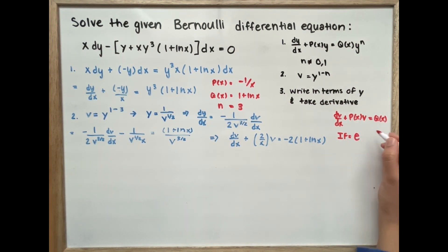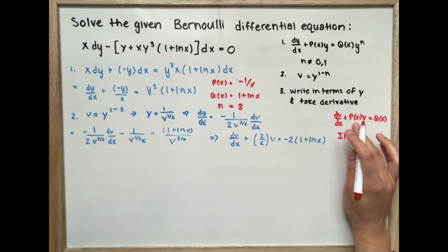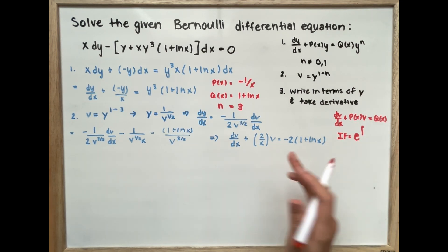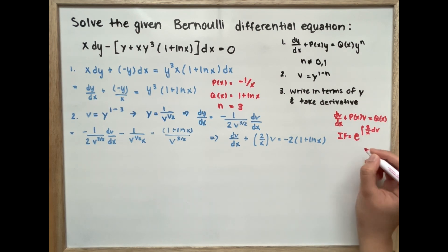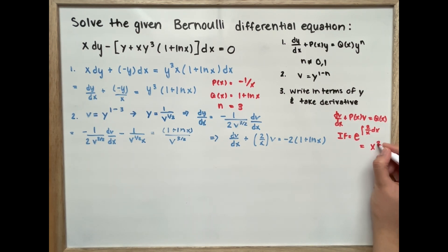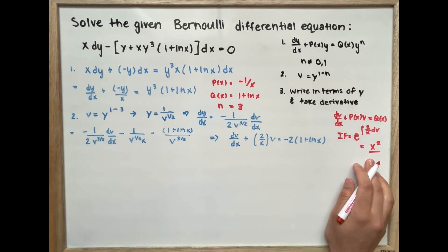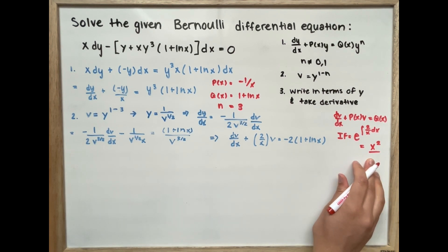We can find our integrating factor by setting e to the power of the integral of P(x), which is 2 divided by x, dx. This equals x to the power of 2. So x squared is our integrating factor.